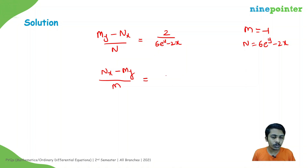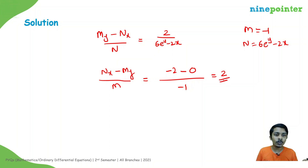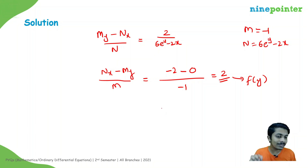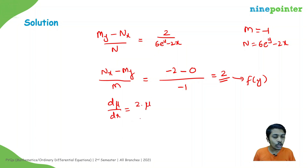Now let's check the second condition: (N_x − M_y)/M. N_x = −2 (from differentiating 6e^(y−2x) with respect to x), and M_y = 0 (from differentiating −1 with respect to y). So (N_x − M_y)/M = (−2 − 0)/(−1) = 2. This is a constant — a function of y only — so we can use this equation.